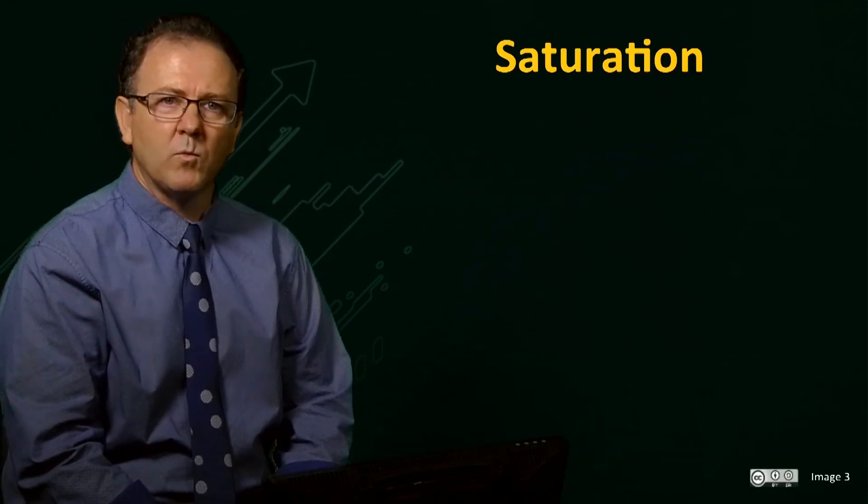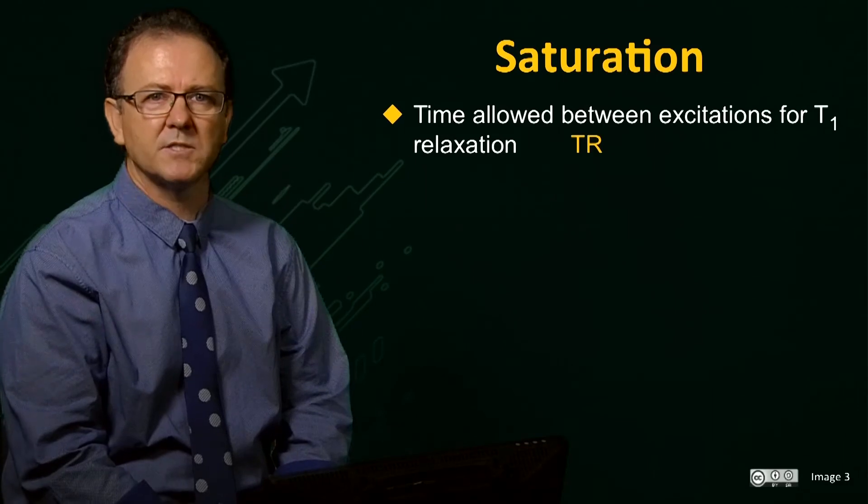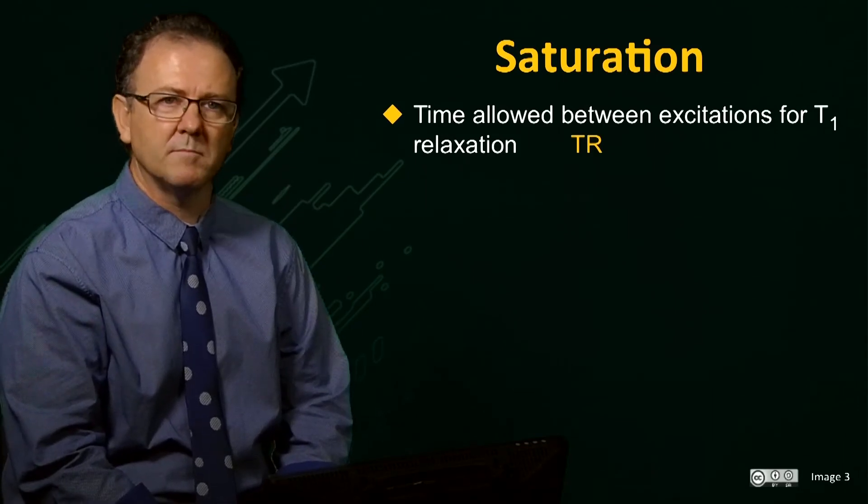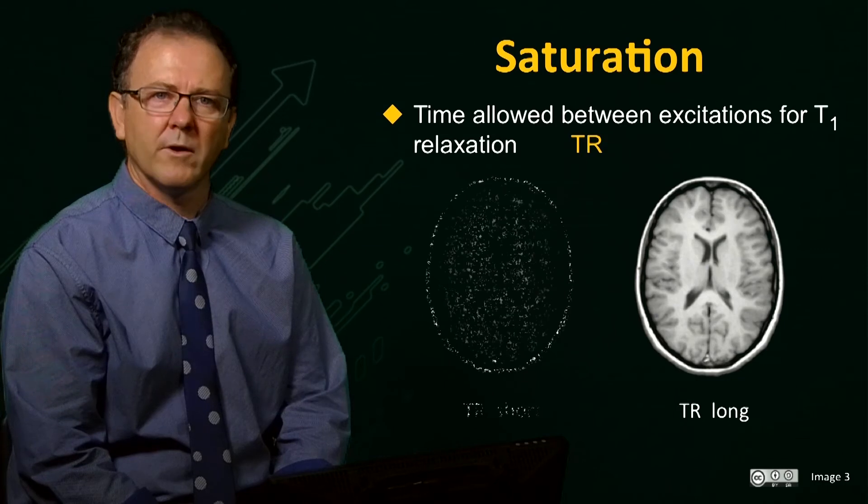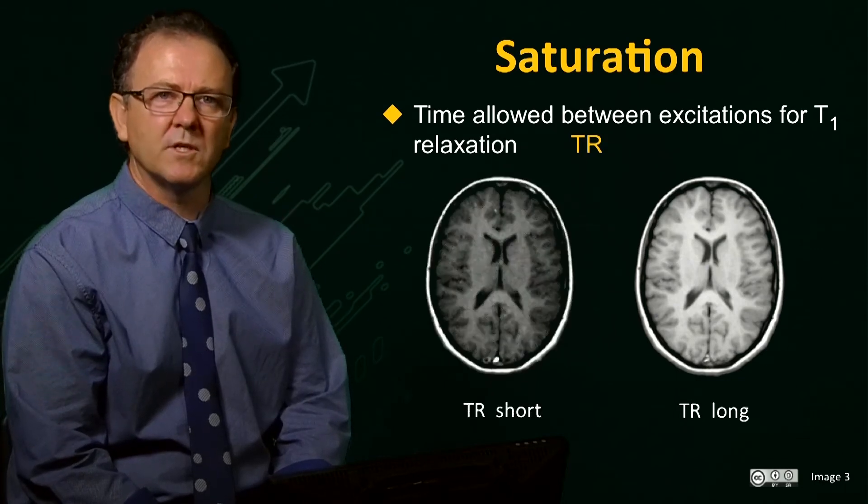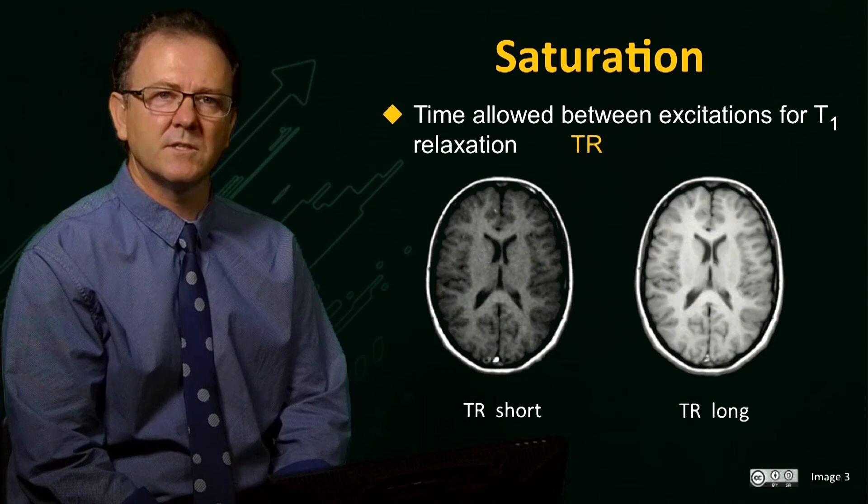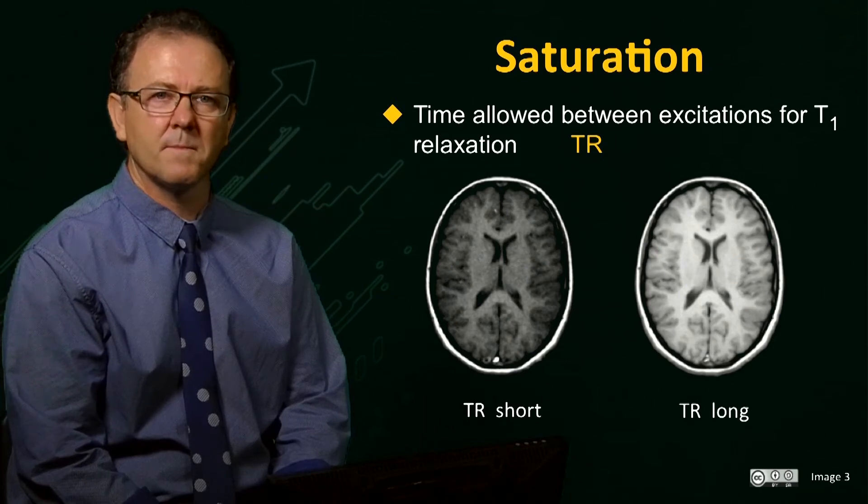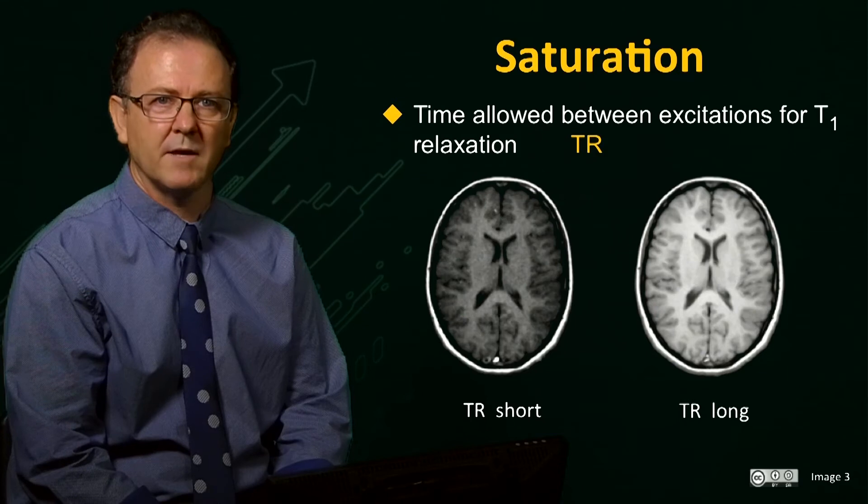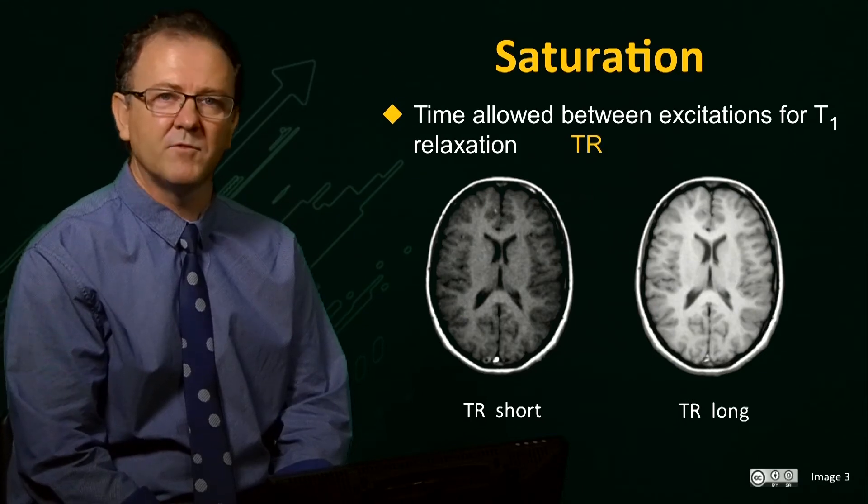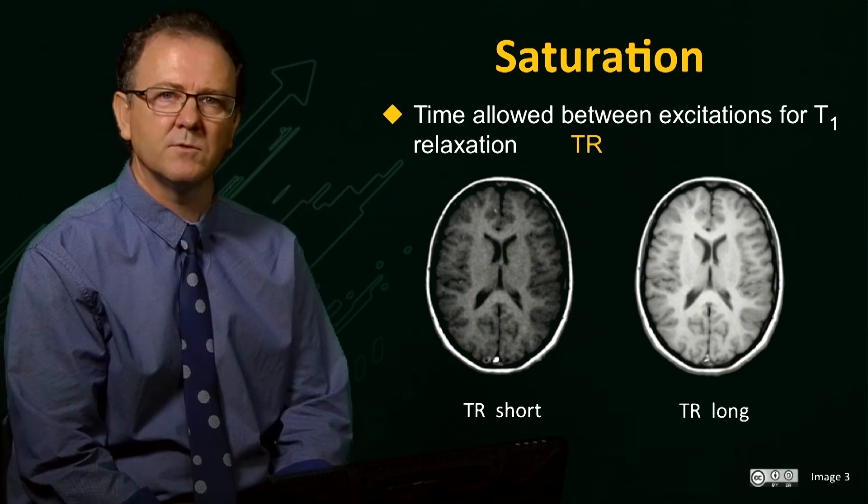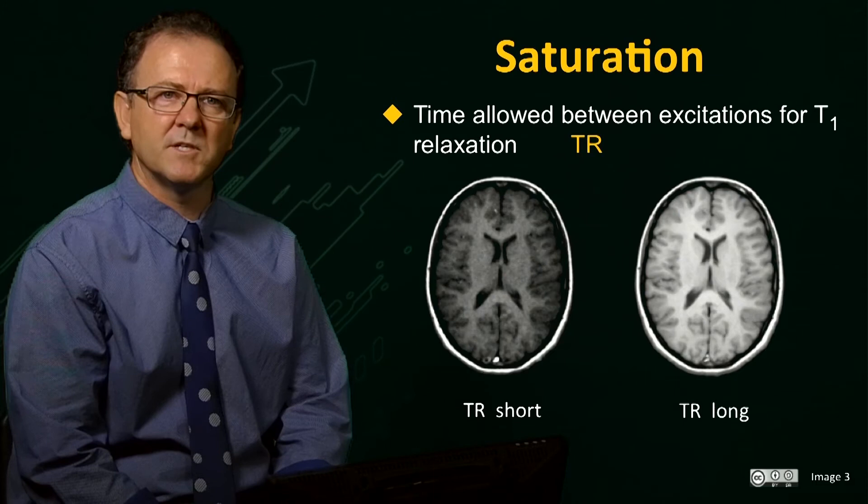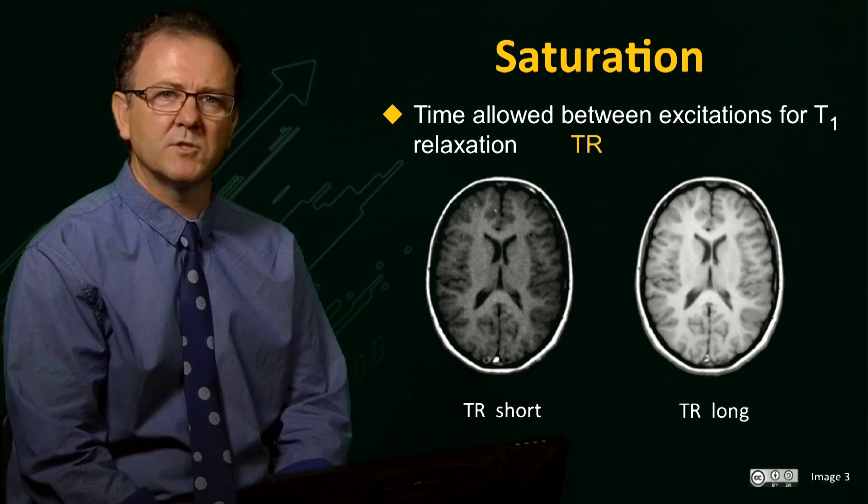The time that we wait between excitation pulses in an MRI scan is called the recycle time or TR. This brain image was acquired with a long TR and shows bright signal for most of the tissues, whereas this image was acquired using a short recycle time and so the signal is significantly attenuated. However, since different tissue types such as grey matter and white matter have different T1 values, the contrast between them is actually higher for the short TR image. We will discuss the effect of T1 and T2 values on image contrast later.